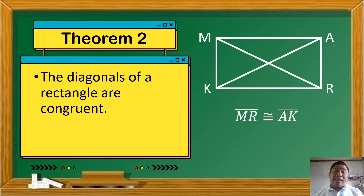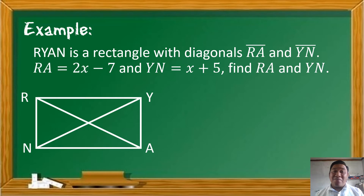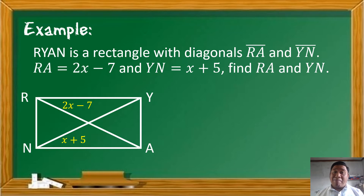Para mas maunawaan natin ang sinasabi ng theorem na ito, let's have an example. Quadrilateral R-Y-A-N is a rectangle with diagonals R-A and Y-N. Diagonal R-A measures 2x minus 7, and diagonal Y-N measures x plus 5. We are asked to find the measure of diagonal R-A and the measure of diagonal Y-N.